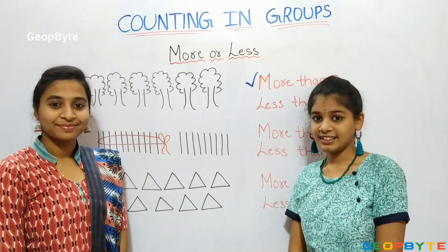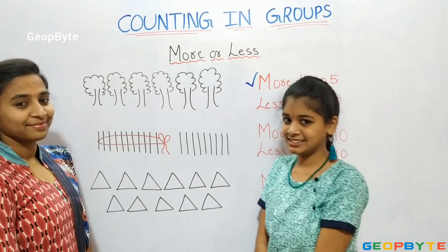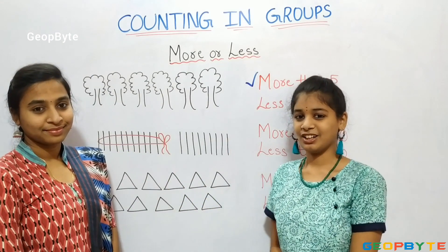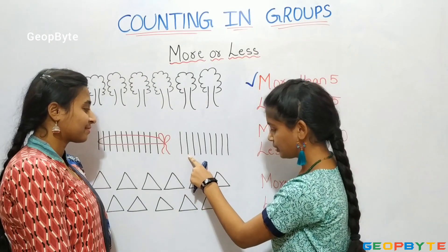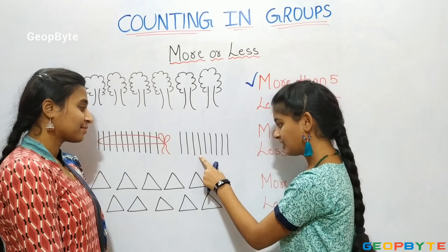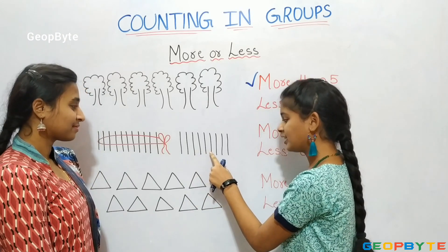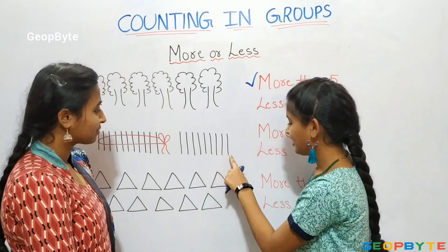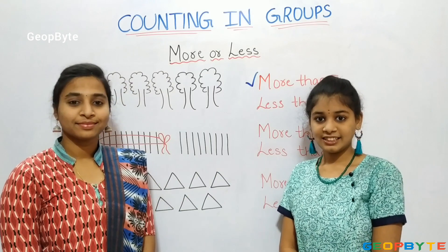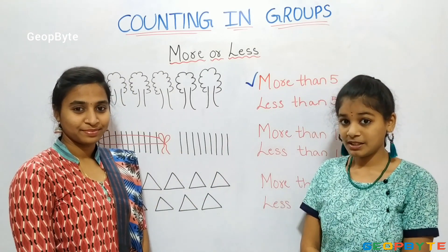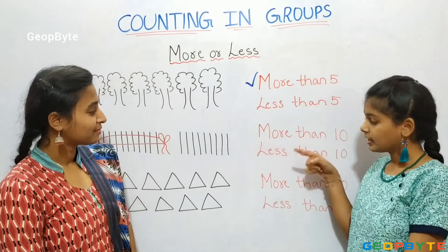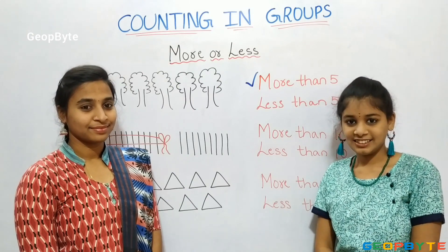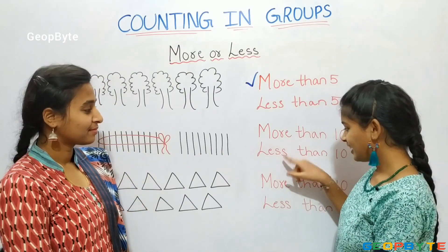Now, let us see this bundle of sticks. There are few sticks in this bundle. Let us count. 1, 2, 3, 4, 5, 6, 7, 8, 9. There are 9 sticks in this bundle. Is the number 9 more than 10 or less than 10? Yes, correct answer. The number 9 is less than 10.